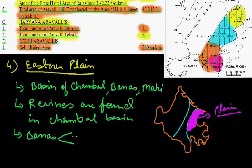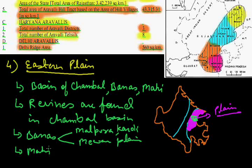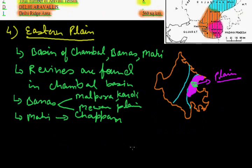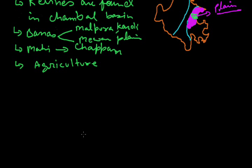The Banas river part can be divided into two parts: in the north it is the Malpura or Karuli plains, and in the south it is the Mewar plains. The Mahi river, locally also known as Chappan plain, flows in the south. This is the main agricultural region of Rajasthan; the main crops grown here are rice, wheat, and soya beans.